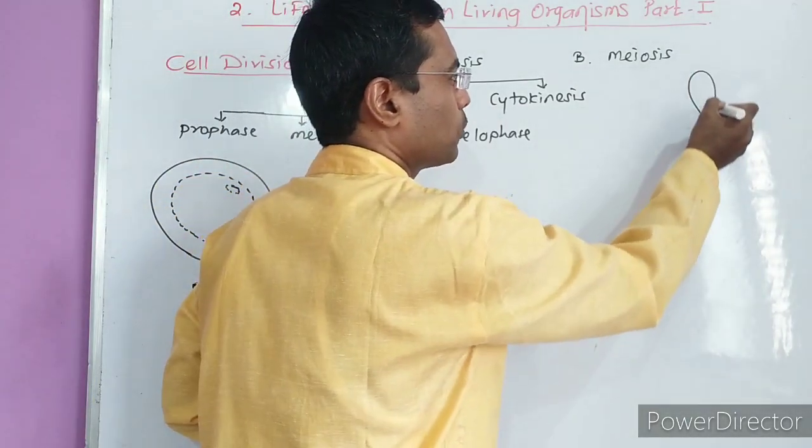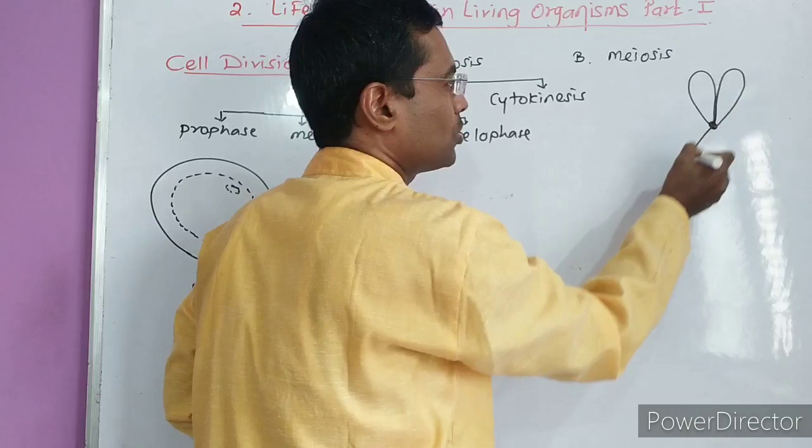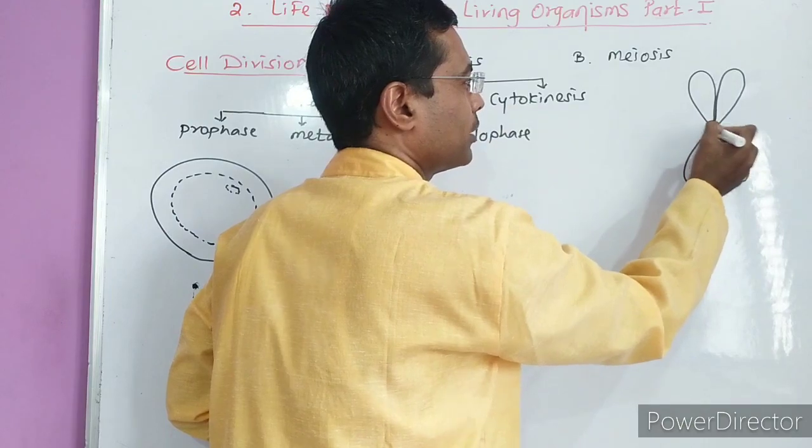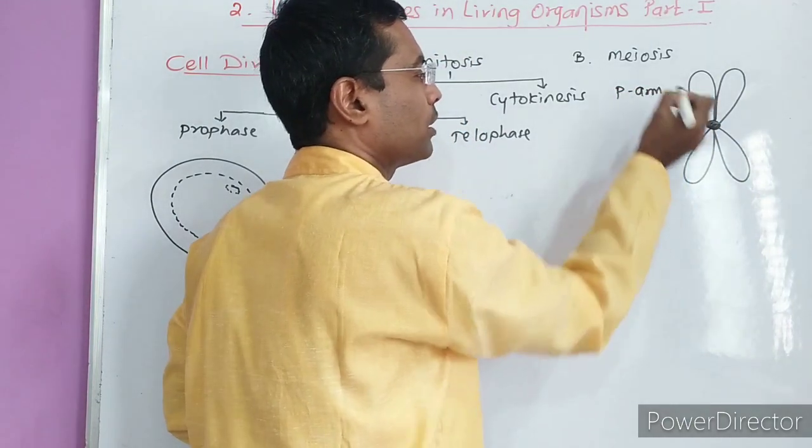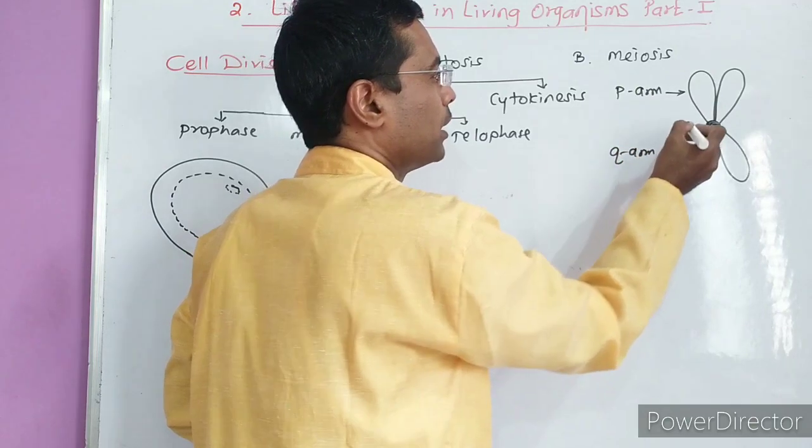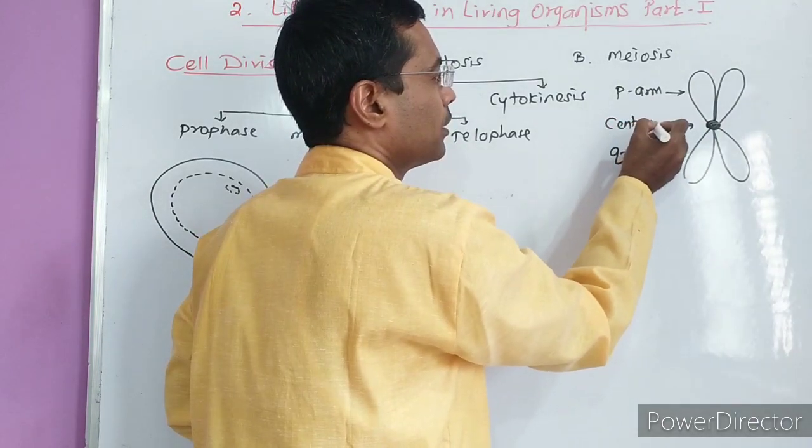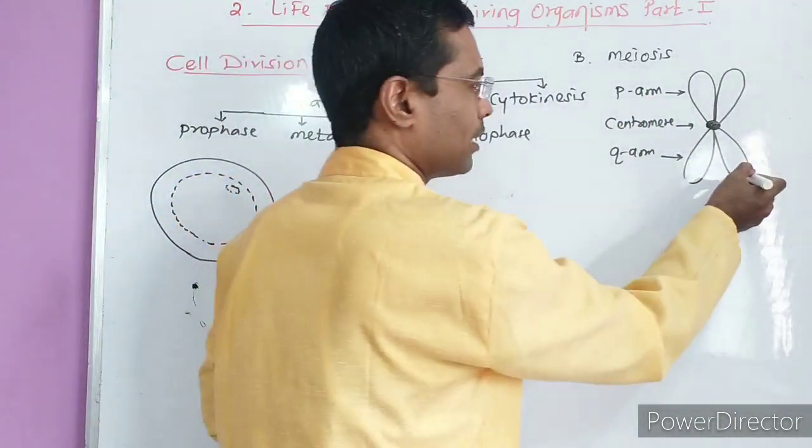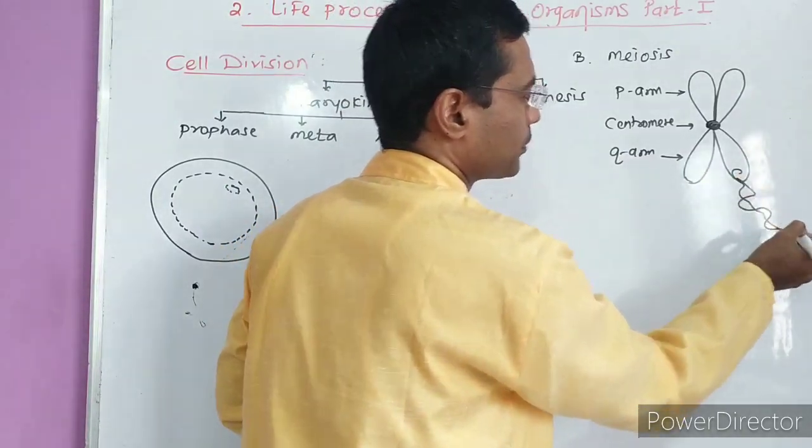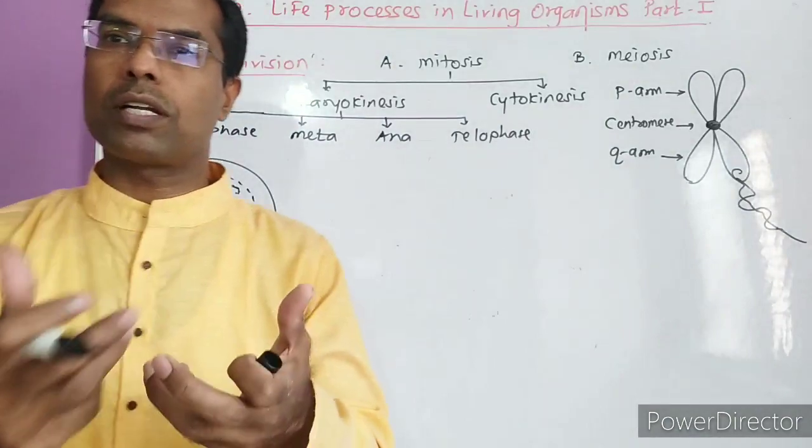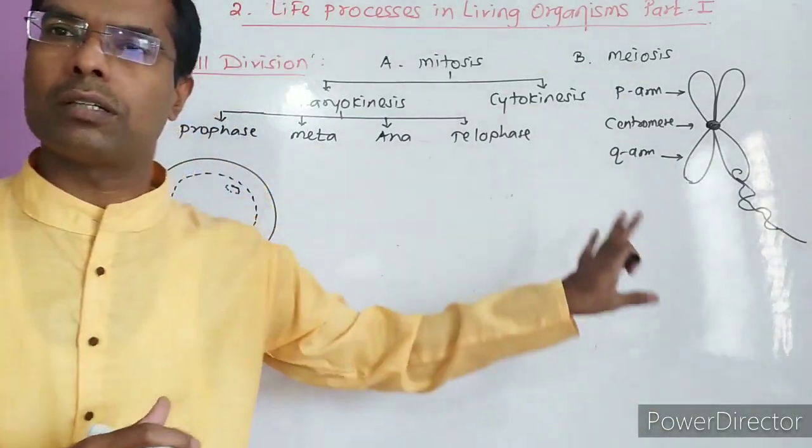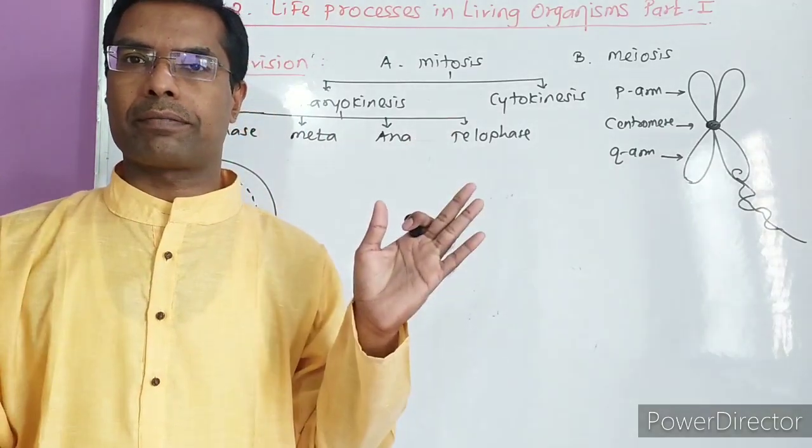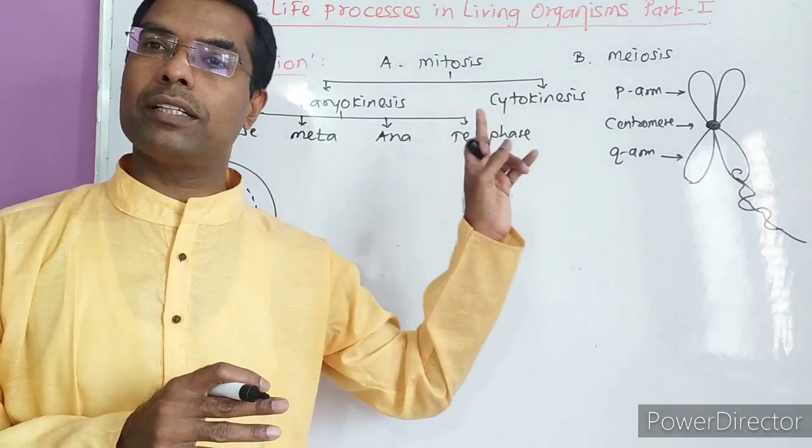The chromosome consists of two sister chromatids. This is called the P arm and this is called the Q arm. And this is the centromere - the thick part of the chromosome. The chromosome is formed from DNA. This DNA is coiled with protein, called histone protein. From this, chromosome formation occurs. When a cell is going to divide in cell division, then chromosomes are visible. Sister chromatids are visible.